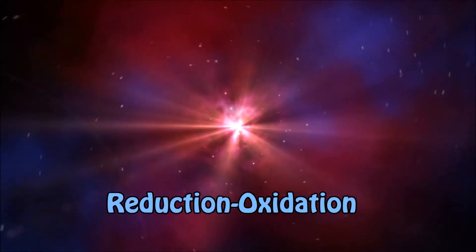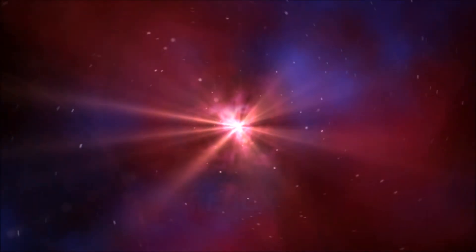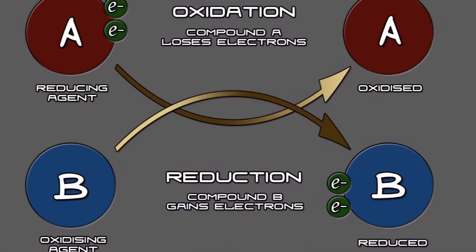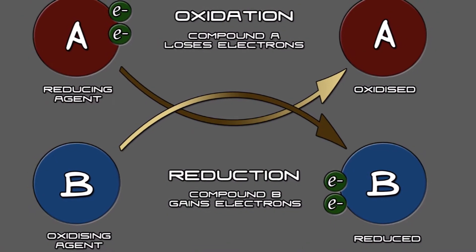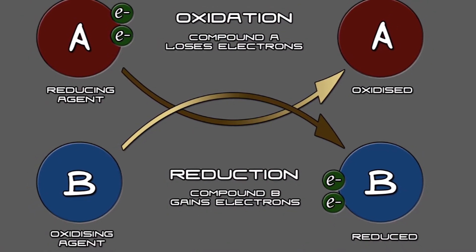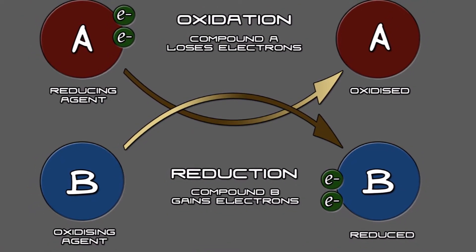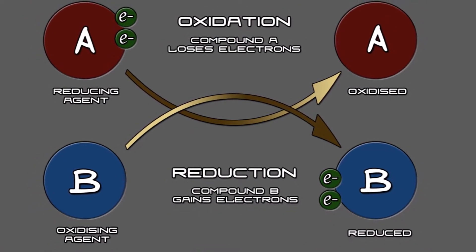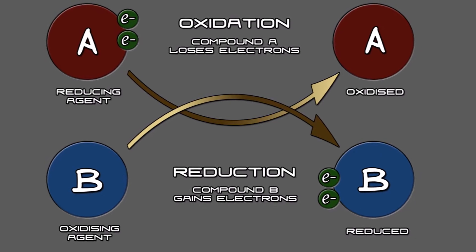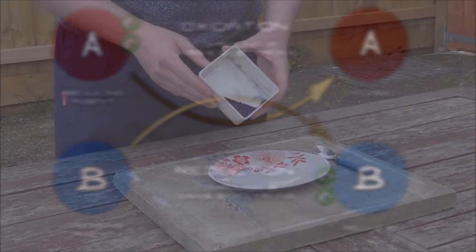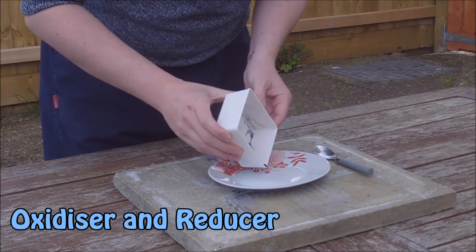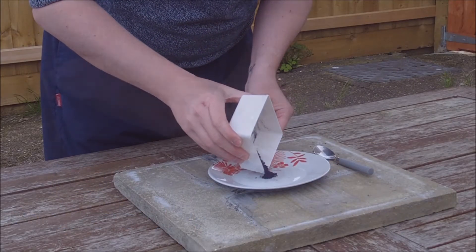A reduction oxidation reaction, or redox as it's more commonly known, is a reaction that can be described as the transfer of electrons or the loss and gain of oxygen and hydrogen between reactants. A redox reaction involves an oxidizer and a reducer.